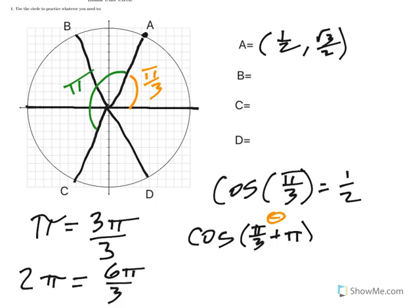And thinking about it, I go, okay, so the x-coordinate of that, the x-coordinate over here was 1/2, and this is just the other side that's going to be negative 1/2.